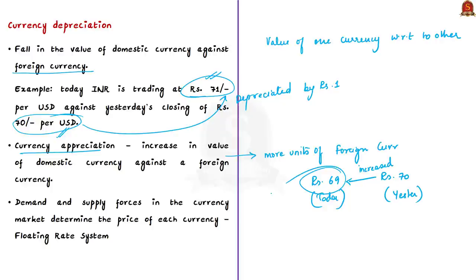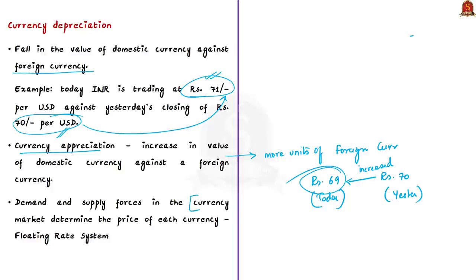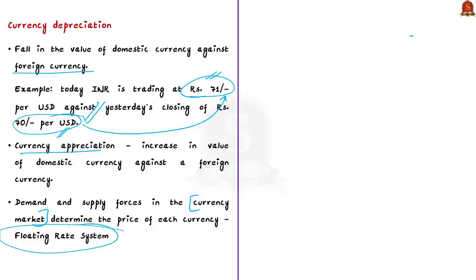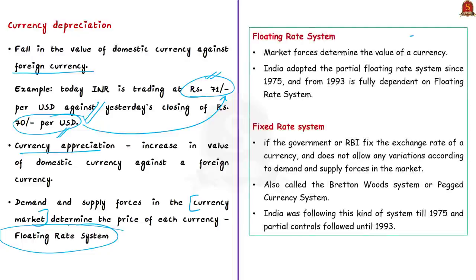You might ask: who fixes the value of the Indian rupee against the US dollar — the Indian government or the RBI? At present, neither of them fixes the value. Rather, the value of Indian rupee is determined by the market, specifically the currency market. The demand and supply forces in the currency market determine the price of each currency. If demand for Indian currency is high, rupee appreciates; if demand is low, rupee depreciates.